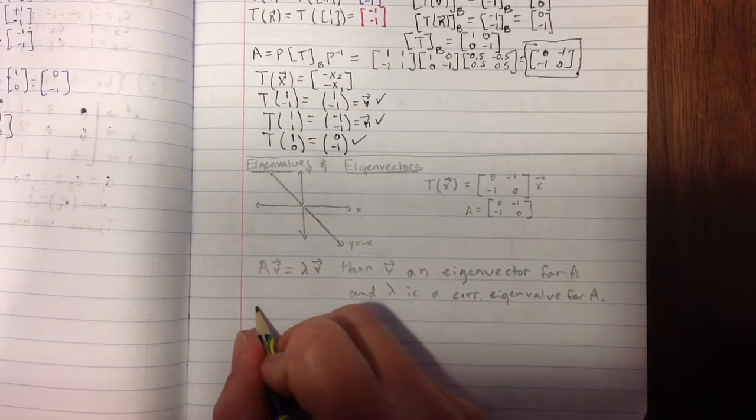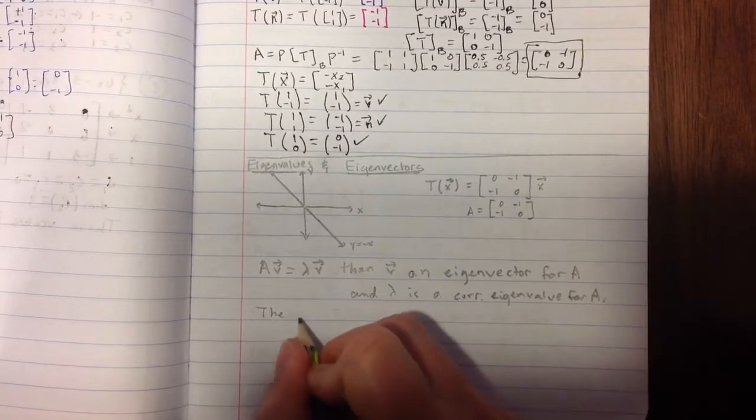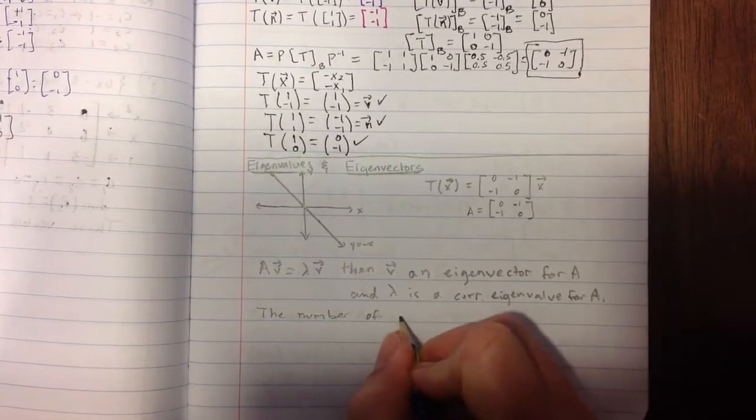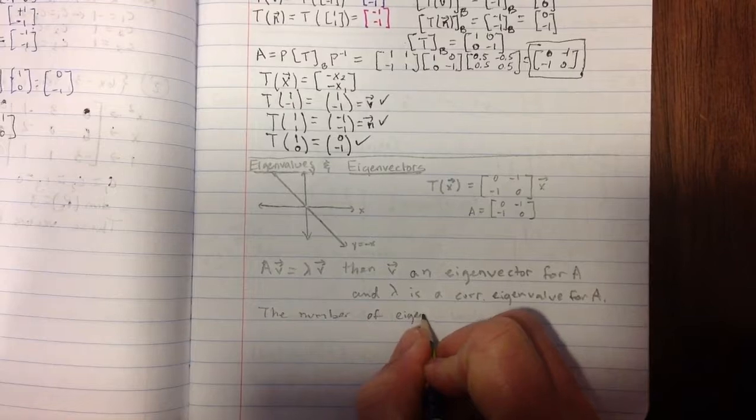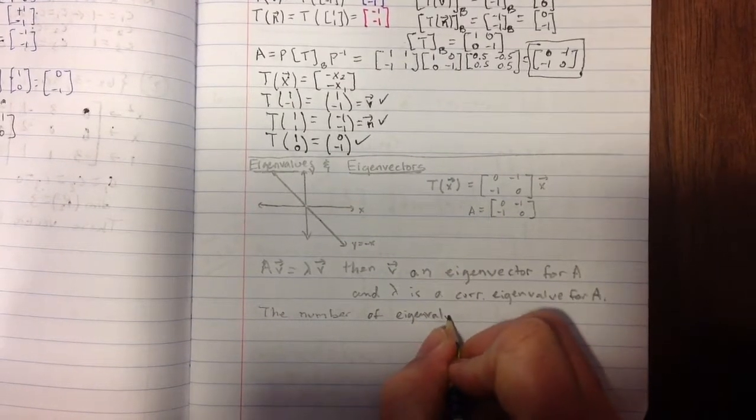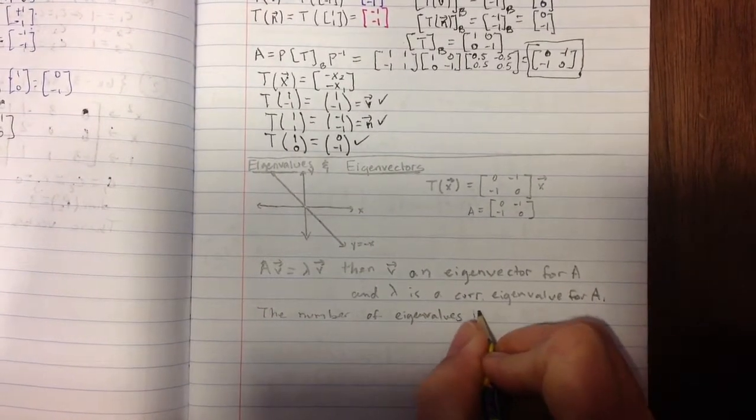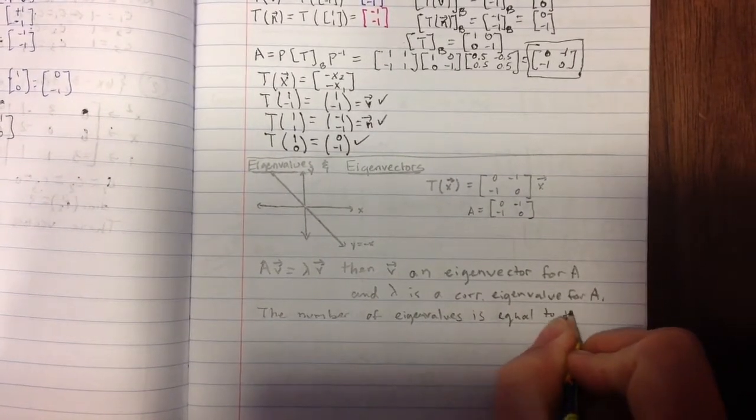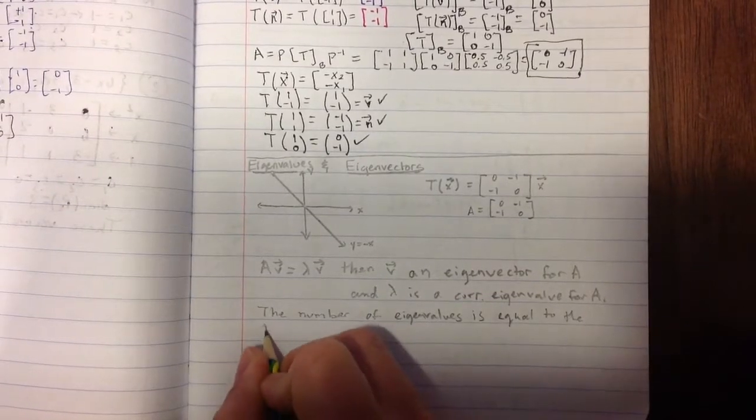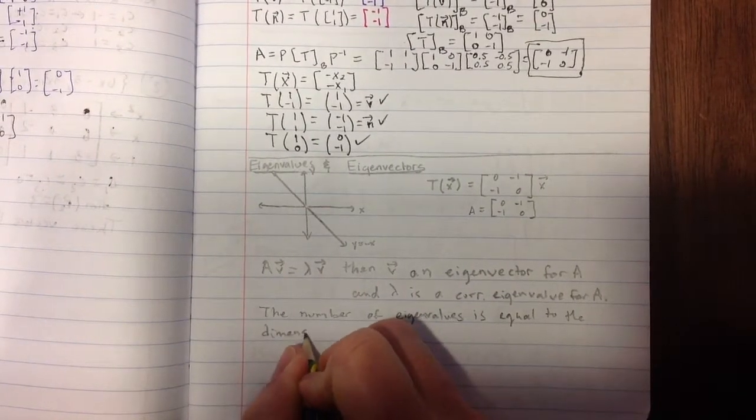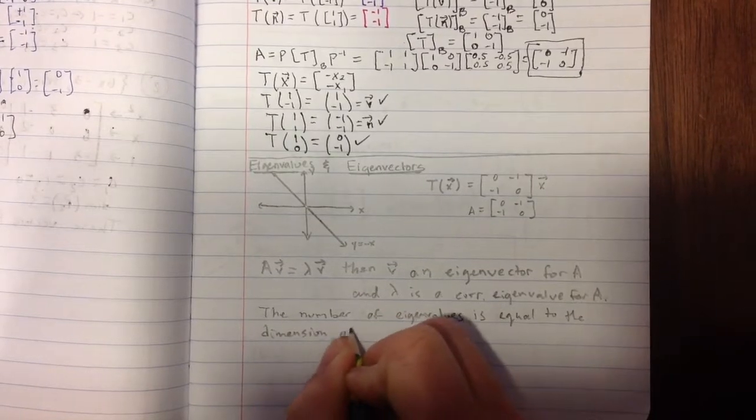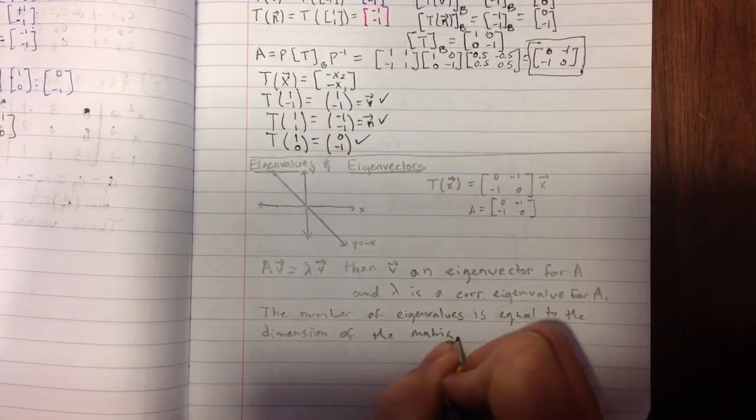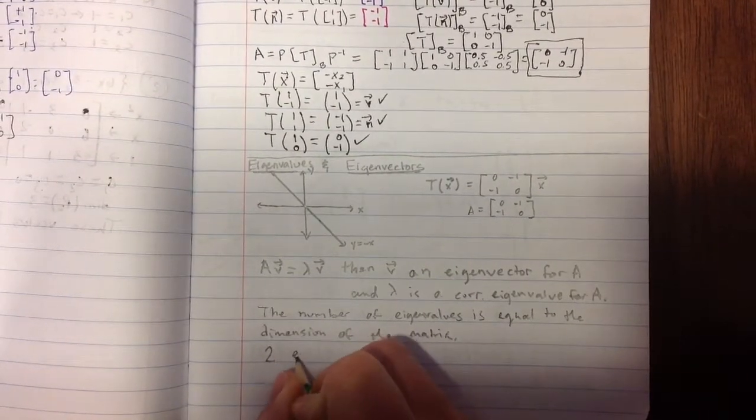The number of these eigenvalues is equal to the dimension of the matrix. So in this case above, we should have two eigenvalues.